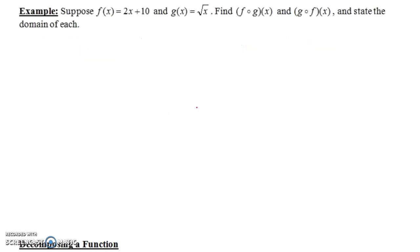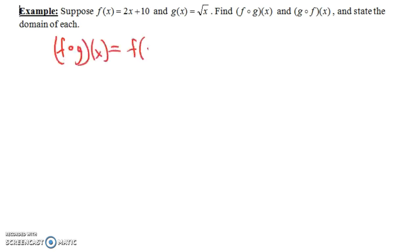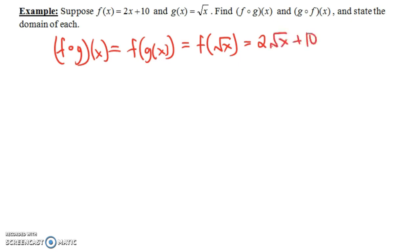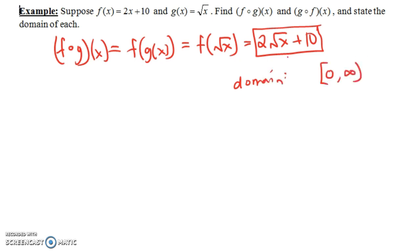Let's do one more example. Suppose f of x is 2x plus 10, and g of x is the square root of x. What is f of g of x? F circle g of x equals f of the square root of x, since g of x is the square root of x. F of x is 2x plus 10, so f of the square root of x is 2 times the square root of x plus 10. For the domain, we can't put negative numbers in for x — we can't take the square root of a negative number. So the domain is the interval closed at 0 going to infinity: the set of all non-negative real numbers.